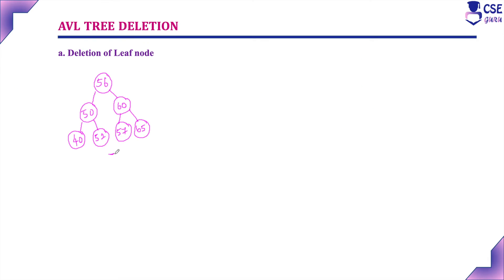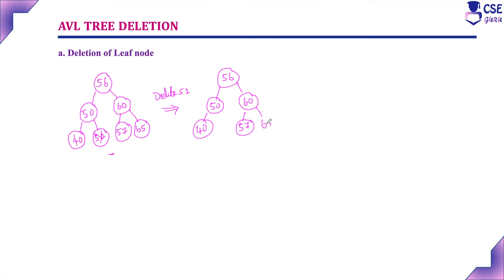Next, consider deleting the leaf node 52 from this AVL tree. After deleting 52, checking the balance factor: all nodes show 0, +1, or -1, so the tree remains balanced. Deleting leaf node 52 does not disturb the balance factor.